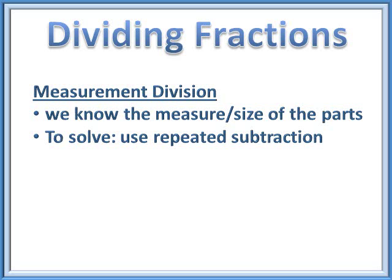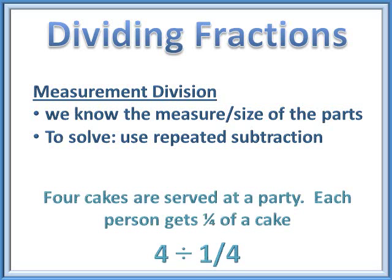The next type is measurement division, where you know the measure or size of the parts but don't know how many parts you can make. This uses repeated subtraction, similar to whole number division. For example: there are four cakes at a party and each person gets one fourth of a cake — you repeatedly subtract one fourth from four to see how many times you can do that. Measurement division is where you know the size of the parts but use repeated subtraction to find how many times you can take away that part.